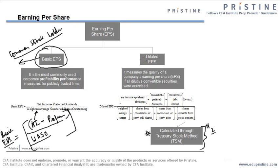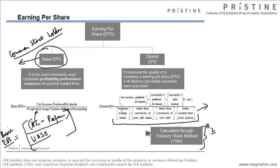Now what is the diluted EPS? Diluted EPS is the ratio of net income minus preferred dividends, plus the convertible preferred dividends, plus the convertible debt interest, upon the total weighted average stocks outstanding. Here, while calculating this, we assume that all the securities that can be converted into equities or common stock are converted.